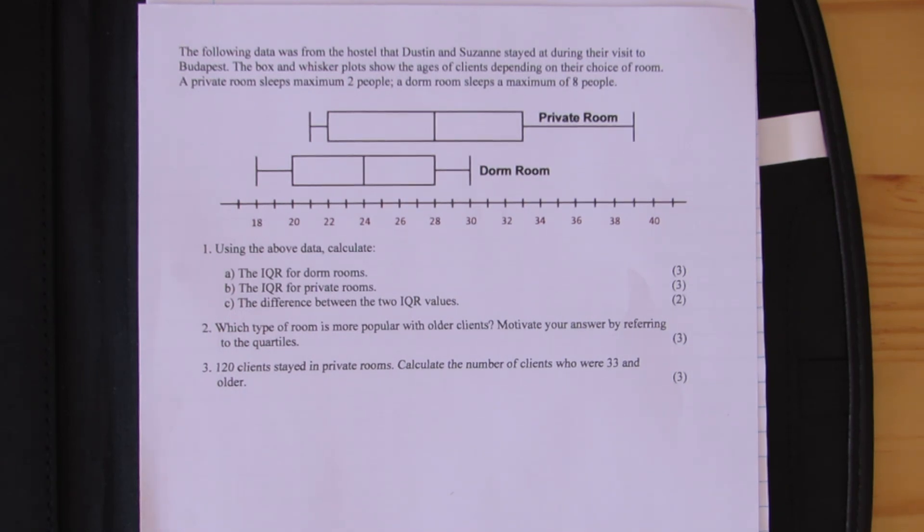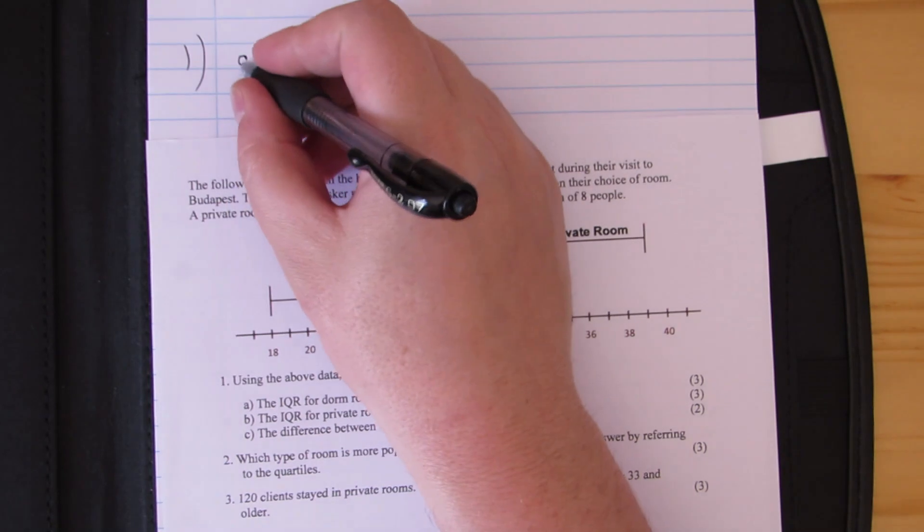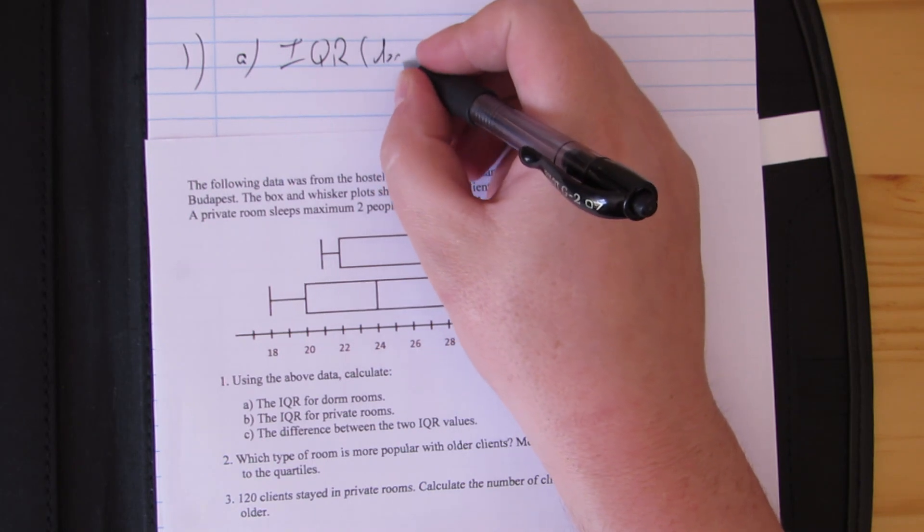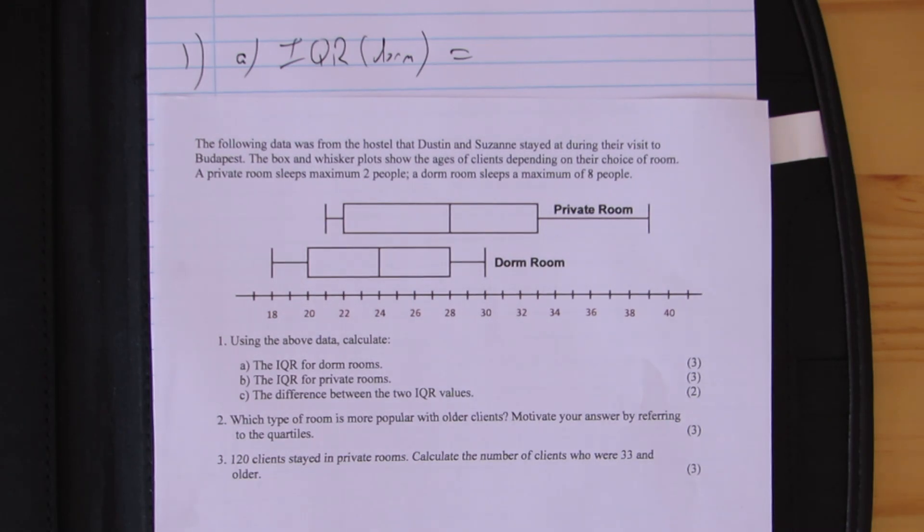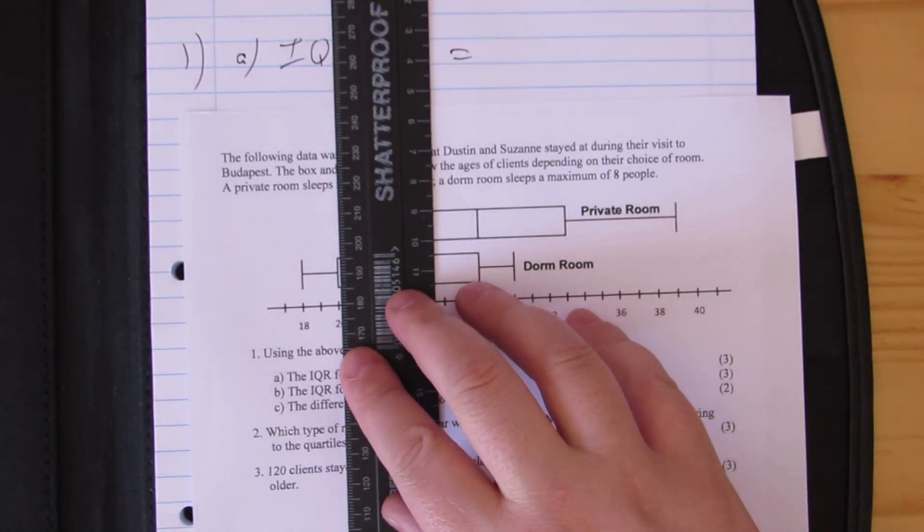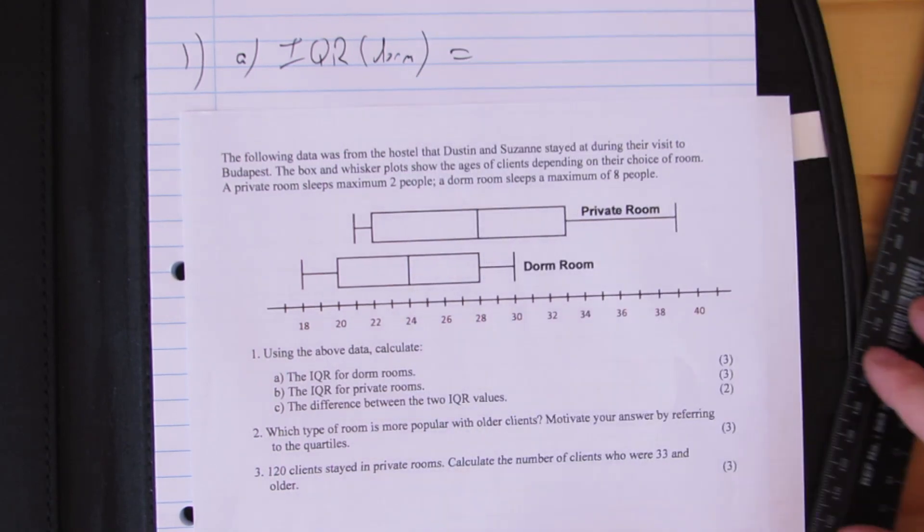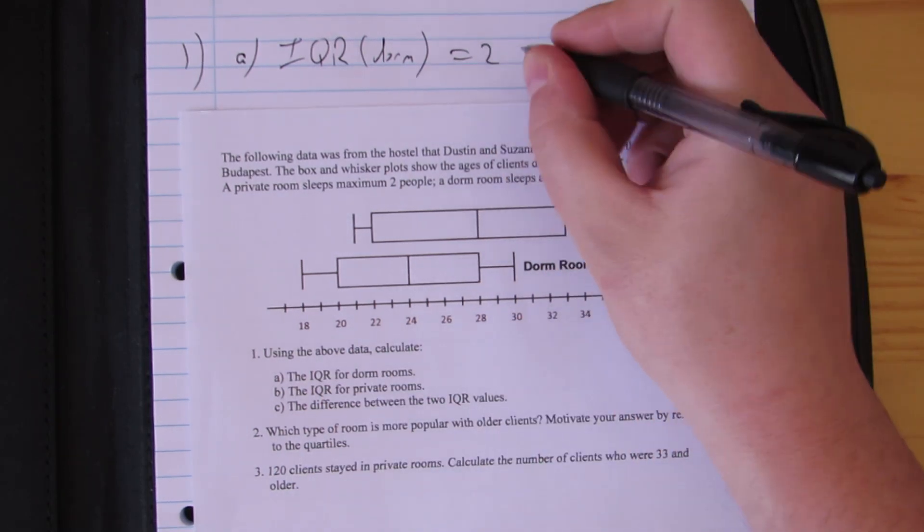Using the above data, calculate the interquartile range for the dorm rooms, the interquartile range for the private rooms, and the difference between the two interquartile values. For part A, I want the interquartile range for a dorm. I need to look at my quartiles. The dorm room's quartile one is 20, and quartile three is 28. We're looking at the difference between Q3 and Q1, so 28 minus 20, which gives me 8.